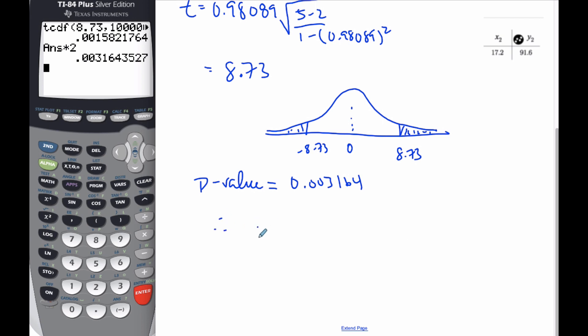Therefore, the p-value is less than alpha, 0.02. I am going to reject H0 and claim a correlation between the two variables.